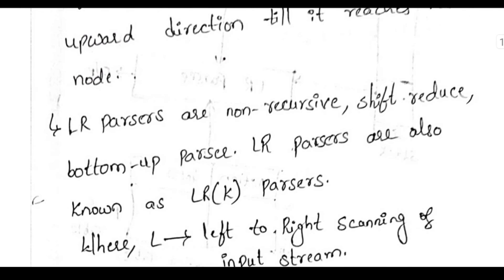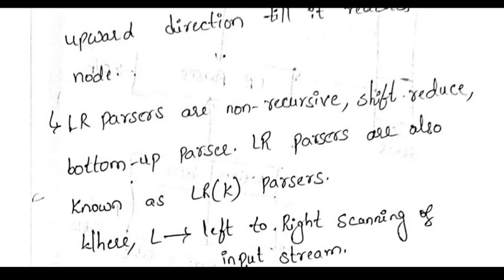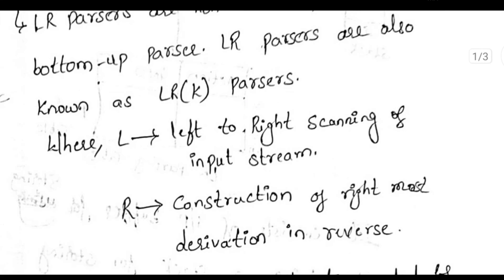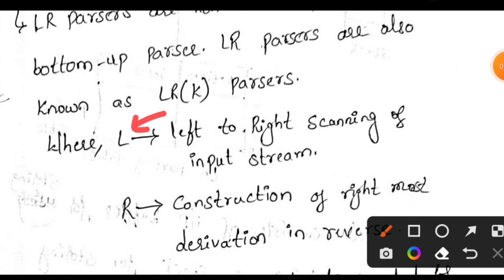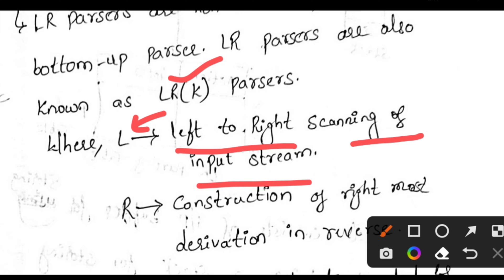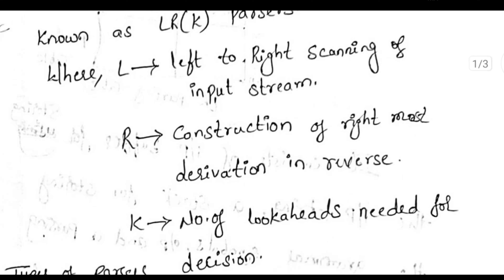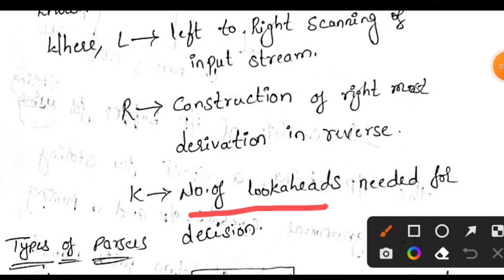LR parsers are non-recursive shift-reduce bottom-up parsers. LR parsers are also known as LR(K) parsers. Here LR(K) means: L represents left-to-right scanning of an input stream, R represents construction of rightmost derivation in reverse, and K represents the number of lookaheads needed for decision.